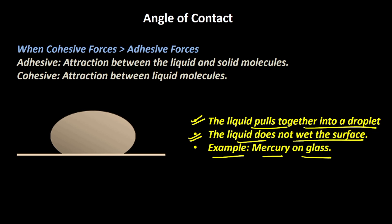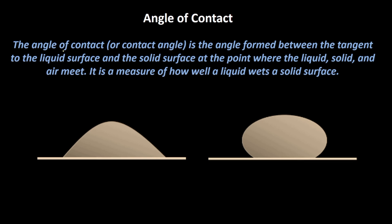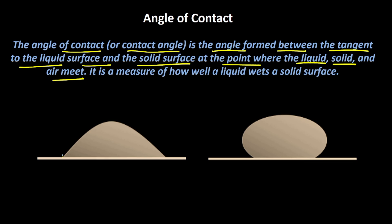Now let's understand all these things in terms of angle of contact. The angle of contact, or contact angle, is the angle formed between the tangent to the liquid surface and the solid surface at the point where the liquid, solid, and air meet. The angle of contact is measured within the liquid surface, and this is what is called the angle of contact, written as theta.